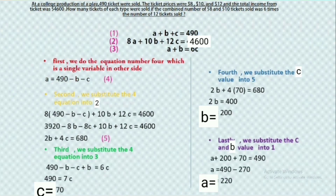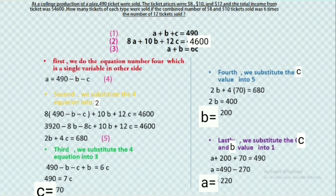Lastly, we substitute c and b values into equation 1 to get the number of tickets, and we get a equals to 220. So, the conclusion is the tickets of each type are 220, 200, and 70.